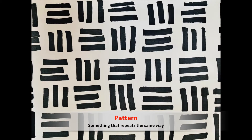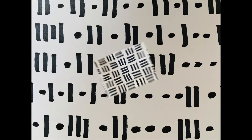So boys and girls, in this picture you can see that this is a pattern. It has the same images and symbols that are repeating over and over in the same way. But in this other picture, things are repeating again and again, but they're not repeating in the same way. And so that means that this has a repetition, but it is not a pattern.